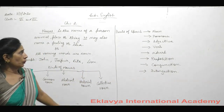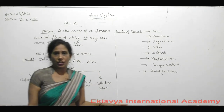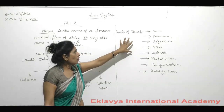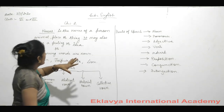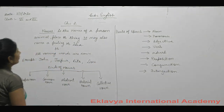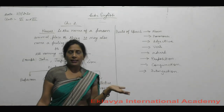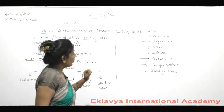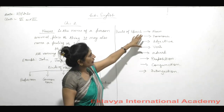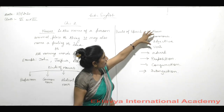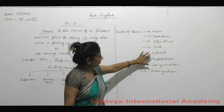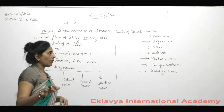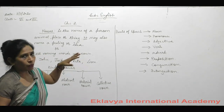In the English language there are eight parts of speech. Parts of speech means all words are categorized into classes and categories. These eight parts of speech are: noun, pronoun, adjective, verb, adverb, preposition, conjunction, and interjection. These are the eight parts of speech in English grammar. Let us start one by one.